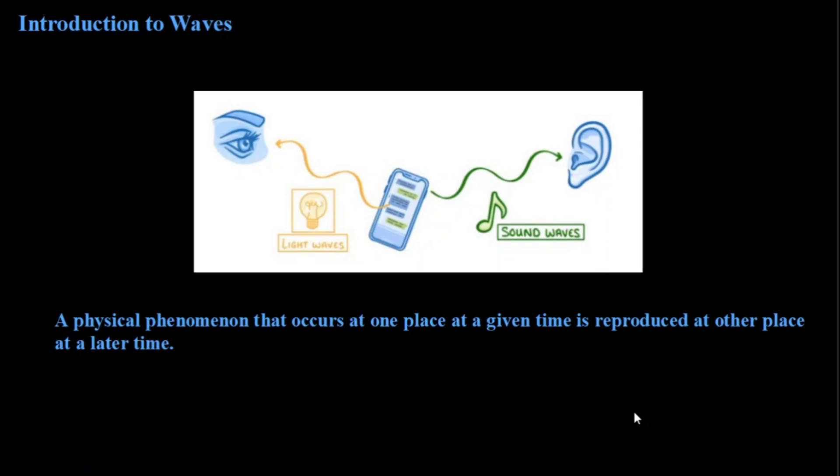A wave is a physical phenomenon that occurs at one place at a given time and reproduce at other place at a later time. This is the best available definition. With this, you have to remember one more. We were very abstract, very general. Now we have to slowly take this concept of waves deep into our subject. Doing so, I would say that wave is a function of time and space. I repeat, wave is a function of time and space.